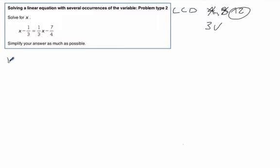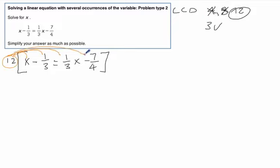So we want to multiply everything times 12. Let's do it the right way. I'll do it the long way, so I'll show you each step. We're going to multiply by 12 times the whole thing: x minus 1 third equals 1 third x minus 7 fourths. We want to distribute this 12 by every single piece all the way across.